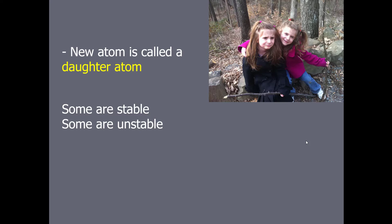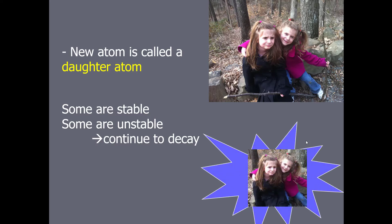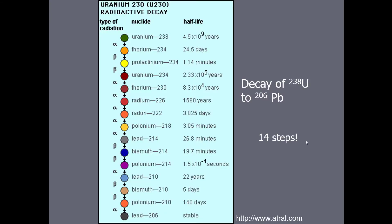Some daughter atoms are unstable, meaning they still don't have an atomic configuration that is typical, so they will continue to decay — sometimes in many, many steps. A series of decays can look like this: this is the decay process of uranium-238, which decays over a series of 14 steps to lead-206. The parent uranium-238 decays over about four and a half billion years through thorium-234, protactinium-234, uranium-234, thorium-230, radium, and so on, ending with lead-206 as the stable daughter atom.